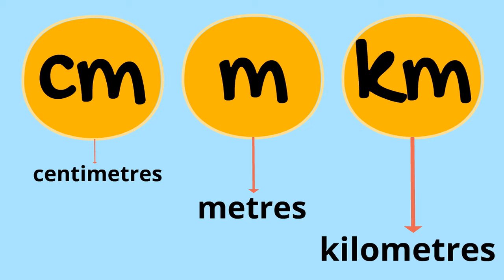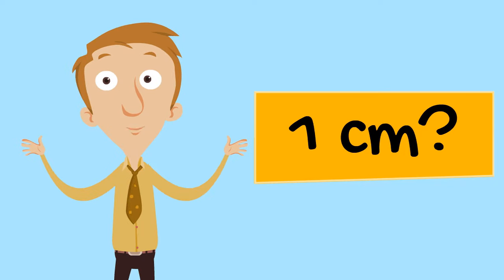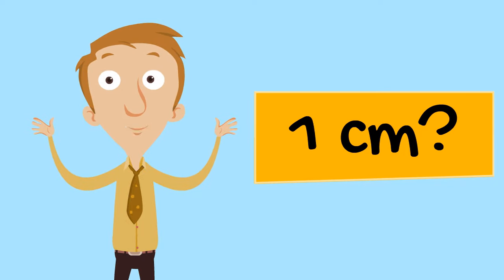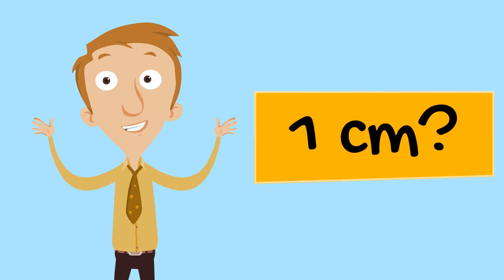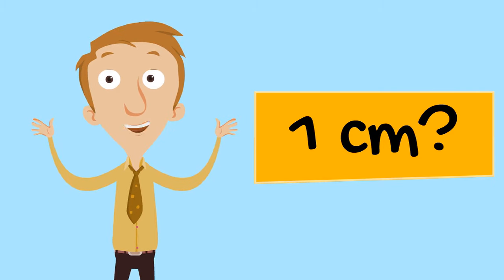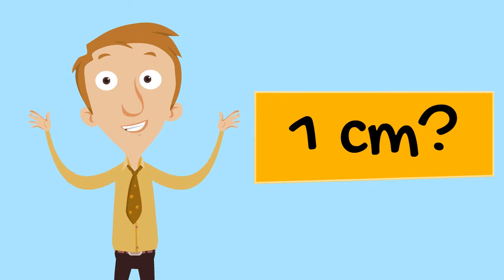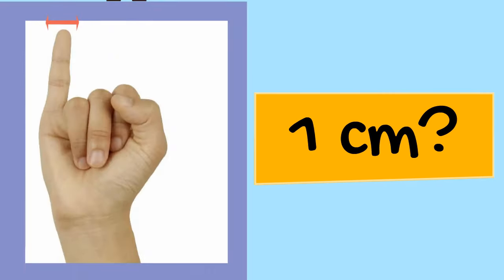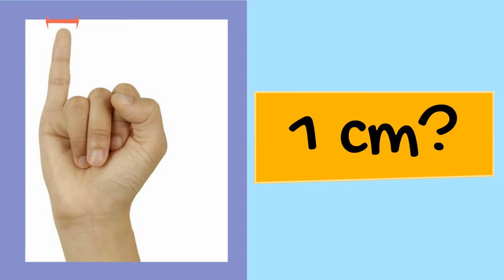We use different units of measurement to measure different things. Let's start off with centimetres. Would you be able to think of something that is one centimetre long? Pause the video and see if you can think of something that is only one centimetre. Well, a good way to remember how long a centimetre is, is by holding up your hand, looking at your little finger or your pinky finger, and seeing how far it is from one side of your pinky to the other — that's roughly about one centimetre.